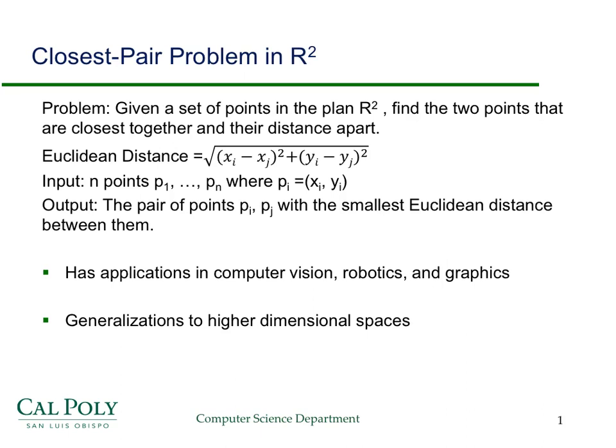This screencast will talk about an algorithm to solve the closest pair problem in the plane, R squared. So first, the formal definition: given a set of points in the plane R squared, find the two points that are closest together and their distance. We'll assume that we're going to use the Euclidean distance, the standard thing that you learned in high school.